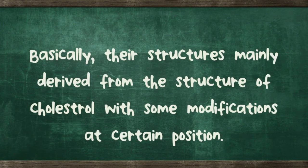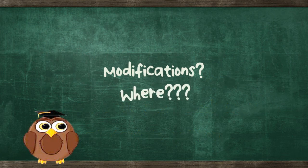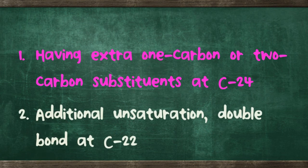Basically, the structure of sterols is mainly derived from the structure of cholesterol with some modifications at certain positions. The first modification is by having an extra one or two carbon substituents at carbon number 24.